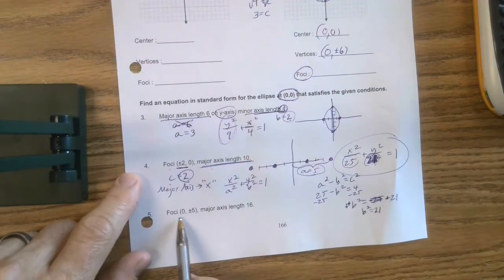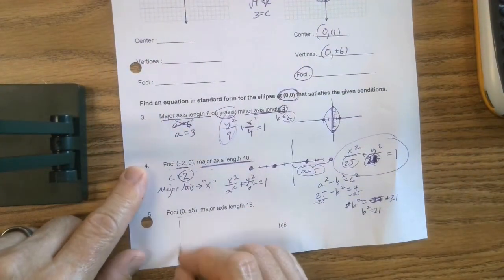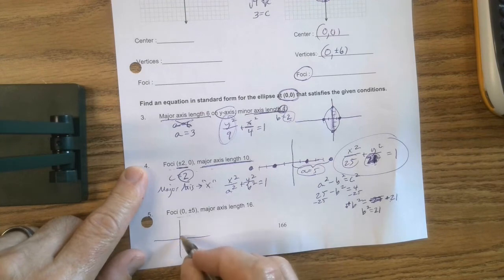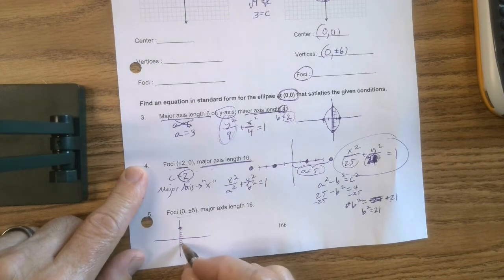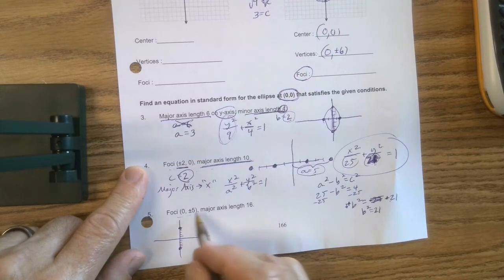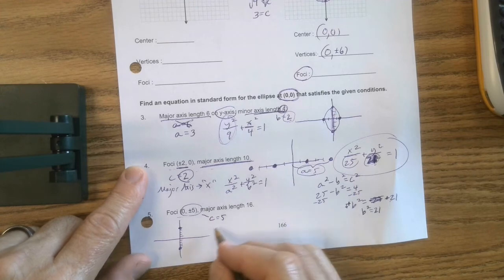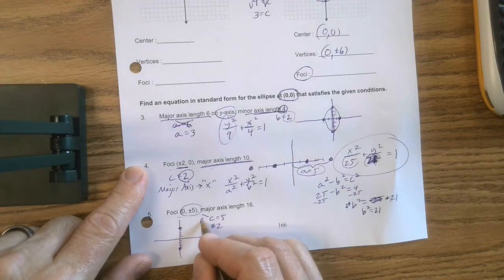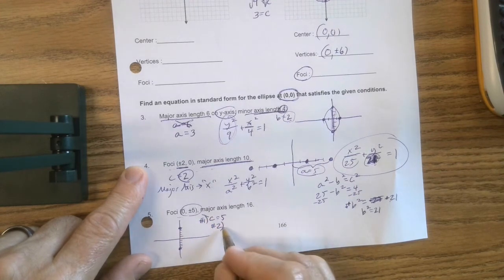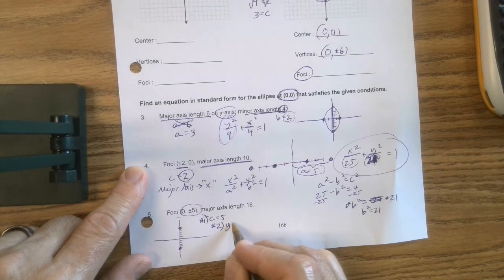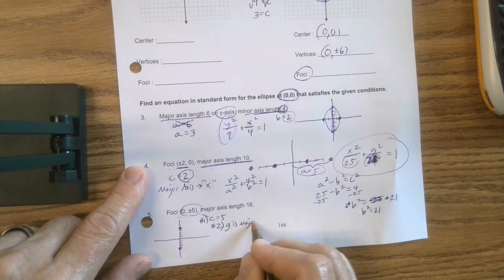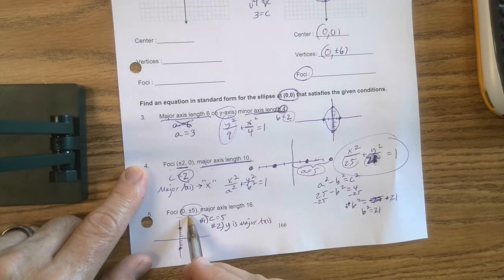All right. Foci 0 plus or minus 5. All right, so I'm going to make these small. 2, 3, 4, 5. 1, 2, 3, 4, 5. That's huge. Two clues. Number 1, c is 5. Number 2, so here's clue number 1. Clue number 2, my y is my major axis. Because the foci are always on the major axis. What does that tell me?